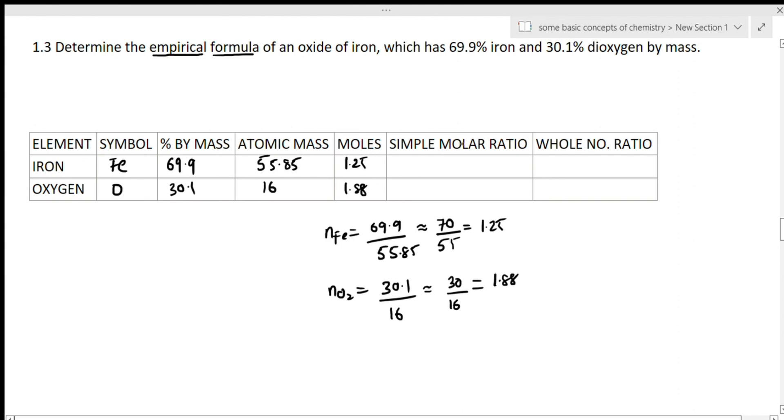Now for the simple molar ratio, you have 1.25 and you have 1.88. Divide both by the smaller number, which is 1.25. So 1.25 divided by 1.25 is 1, and 1.88 divided by 1.25 is approximately 1.5.